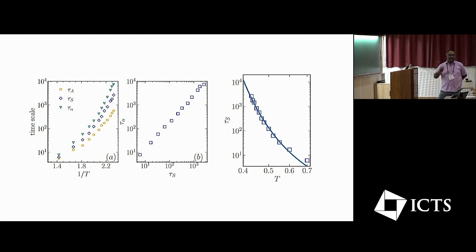Tau_s is the time scale that you obtain via this new metric. And tau_alpha is a typical relaxation time that is associated with the caging time scale, which is called this tau_alpha.